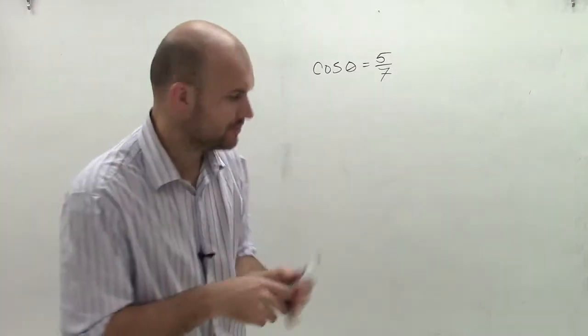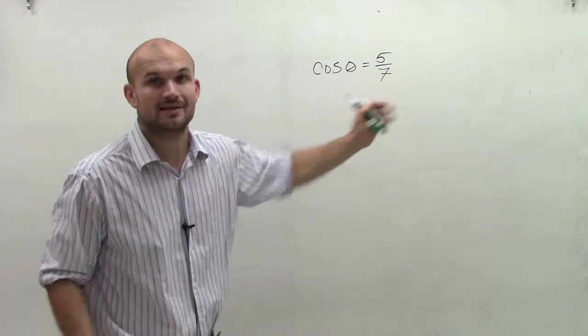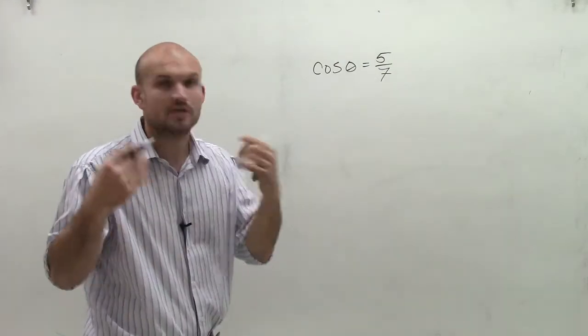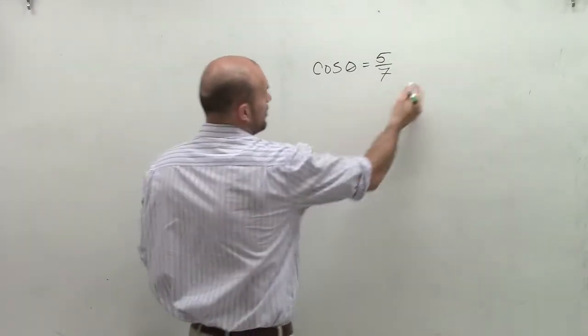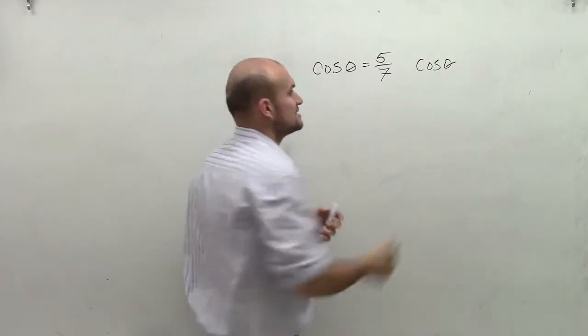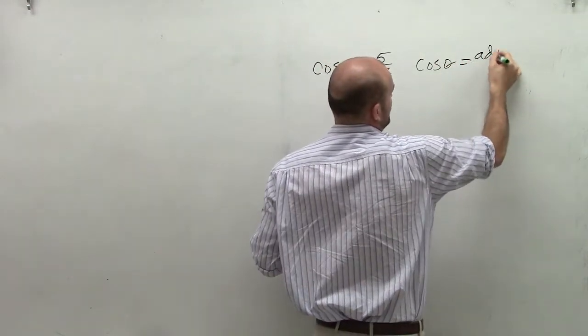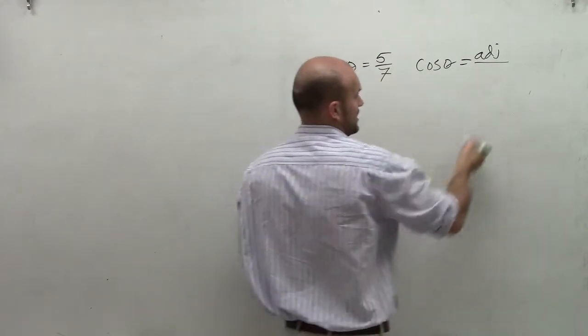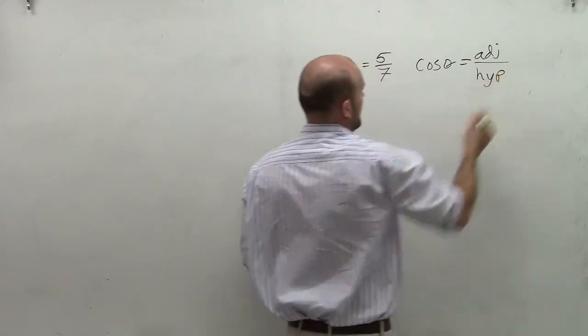So remember, what we want to do whenever we're given a point that's not on the unit circle, the main important thing is we want to draw a triangle. Now remember the cosine function, cosine of an angle, that represents the ratio of the adjacent side of a triangle over the hypotenuse.